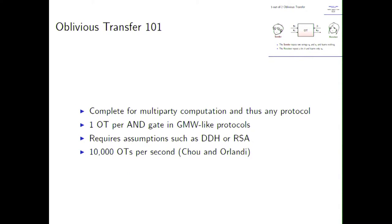A few facts about oblivious transfer: It's complete for multiparty computation and thus any protocol, because multiparty computation is the most complete scheme. In GMW-like protocols, we need one OT per AND gate, so that means we need a lot. Unfortunately, we need some public key crypto-like assumption like DDH or RSA, and there is a recent implementation by Chu and Olandi, and they achieved to generate 10,000 OTs per second. So the question is, how can you be faster? How can you achieve more?